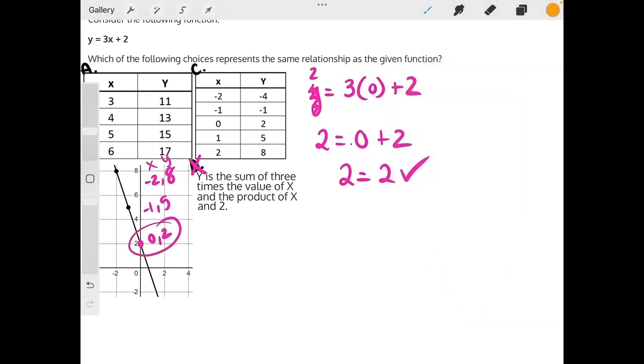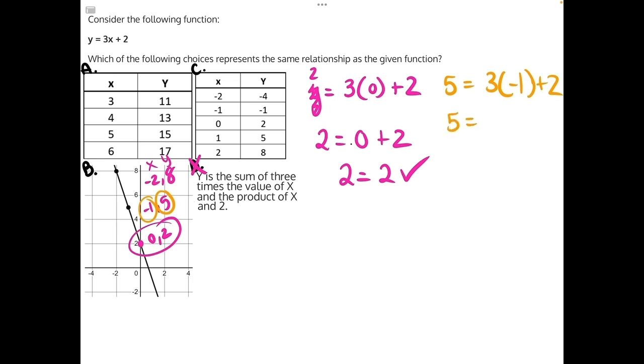Let's switch colors and grab another point. We'll have 5 as our y is equal to 3 times negative 1 is our x, plus 2. 5 is equal to 3 times negative 1 is negative 3, plus 2.